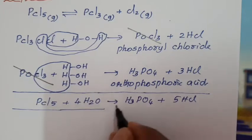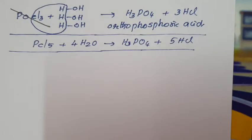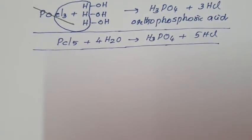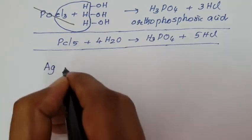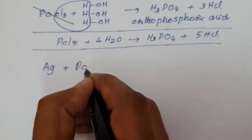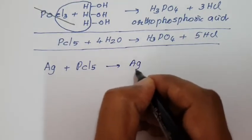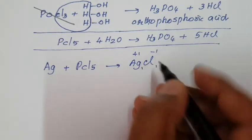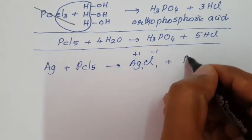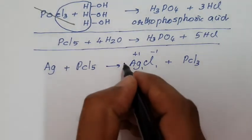In organic chemistry also, PCl₅ is used as a chlorinating agent. When silver (Ag) is treated with PCl₅, silver has valency 1, so it forms silver chloride (AgCl). PCl₅ undergoes reduction to give PCl₃. With 2 Ag atoms and 5 chlorine atoms available, 2AgCl is formed.